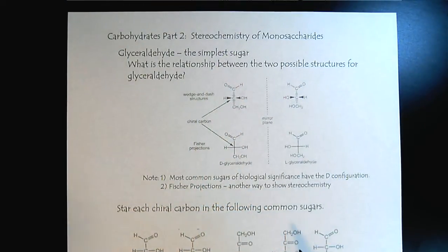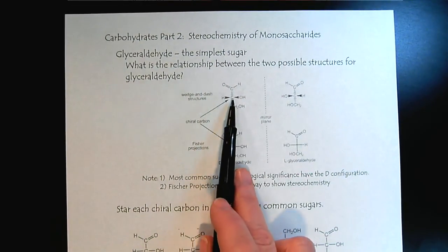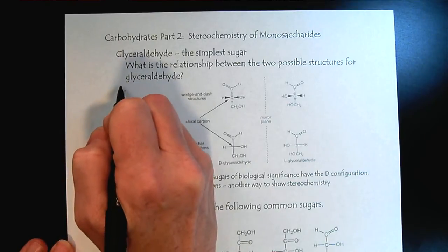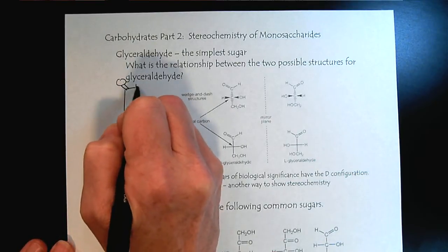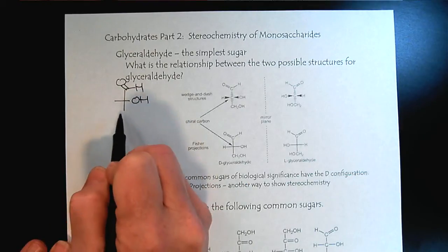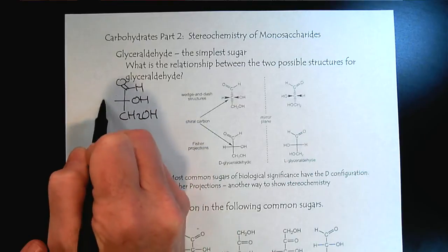Let's go ahead and look at glyceraldehyde, one of the simplest sugars. So if we look here, it's a very simple three carbon sugar, the aldehyde at the top, and then we see the alcohol on the right, and then the terminal alcohol.